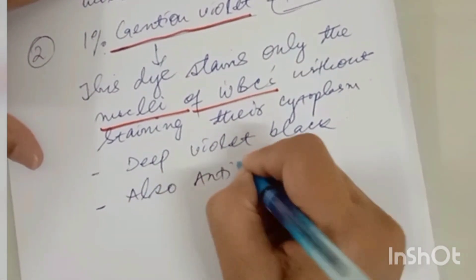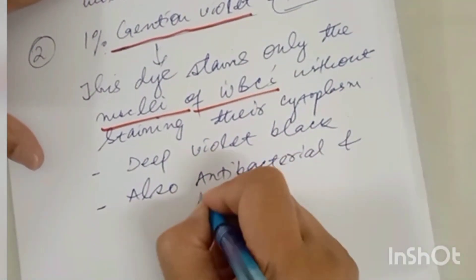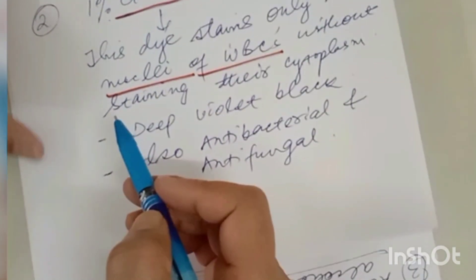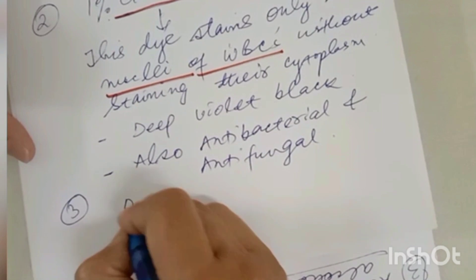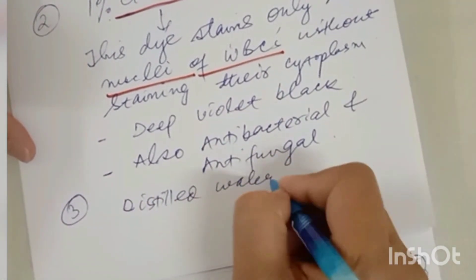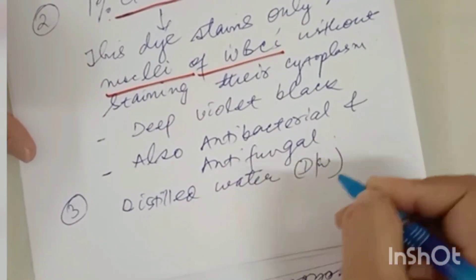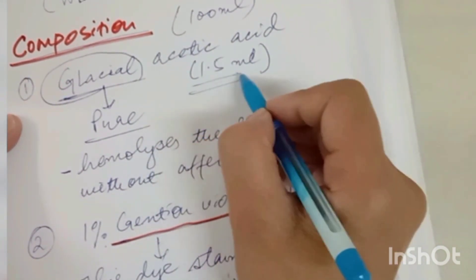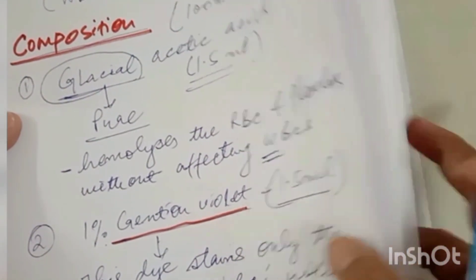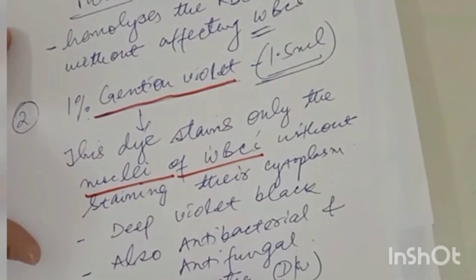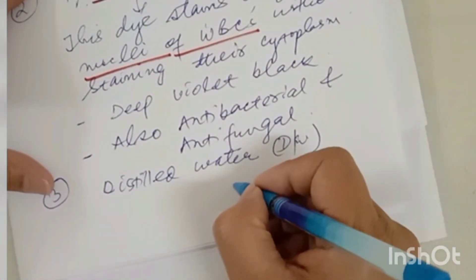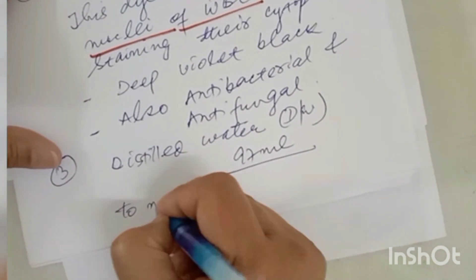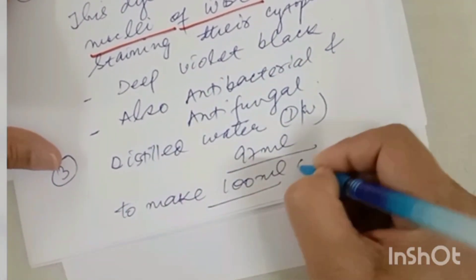The third constituent is distilled water. So we have used 1.5 ml of glacial acetic acid and 1.5 ml of 1% gentian violet — that is 3 ml total. The remaining 97 ml is made up by adding distilled water to make 100 ml of Turk's fluid.